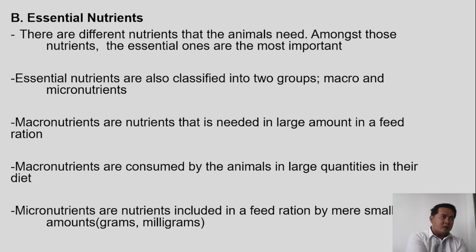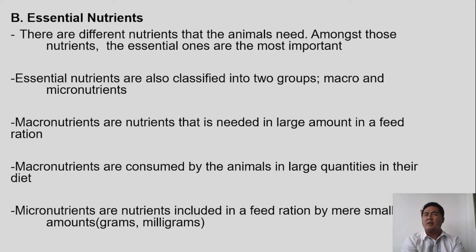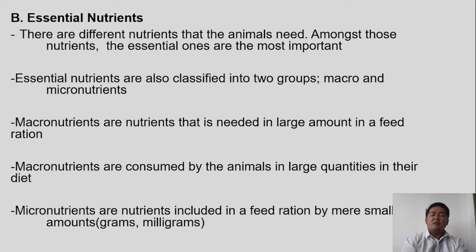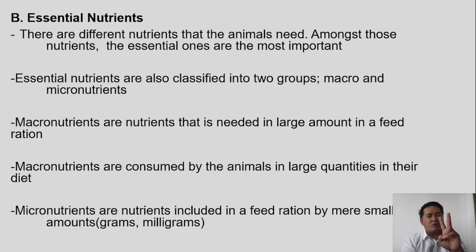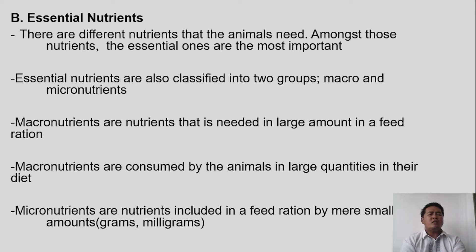Next, what are the essential nutrients? There are different nutrients that animals need, and among those nutrients are the essential ones — the most important. Essential nutrients are classified into two groups: macronutrients and micronutrients.